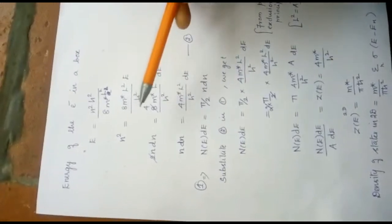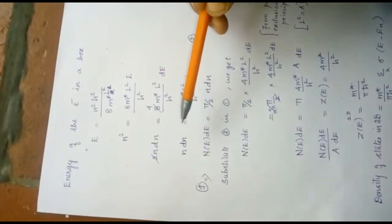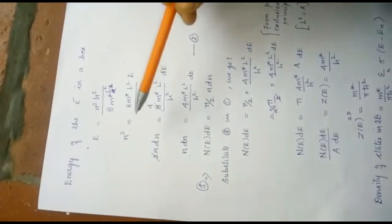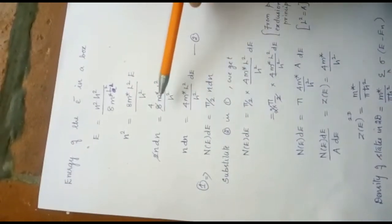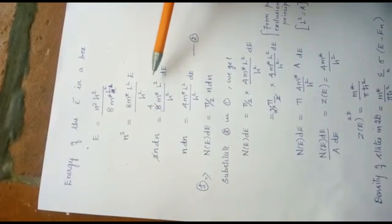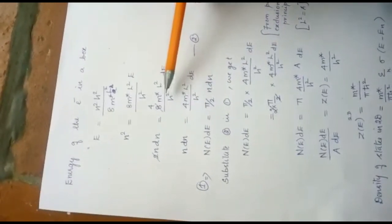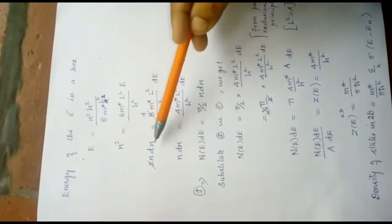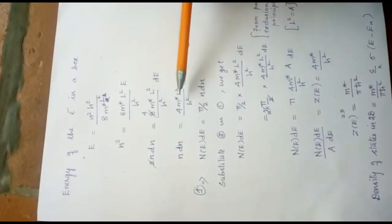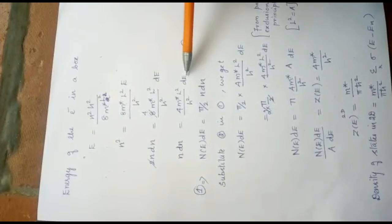From this, we are going to partially differentiate this expression, above expression. So, we are getting n dn is equal to 8m star L square, for E I am putting dE divided by h square. Then n dn is equal to 4m star L square by h square dE.